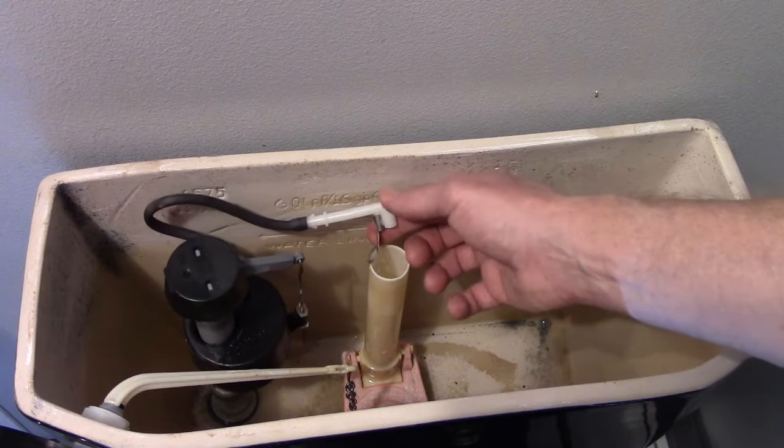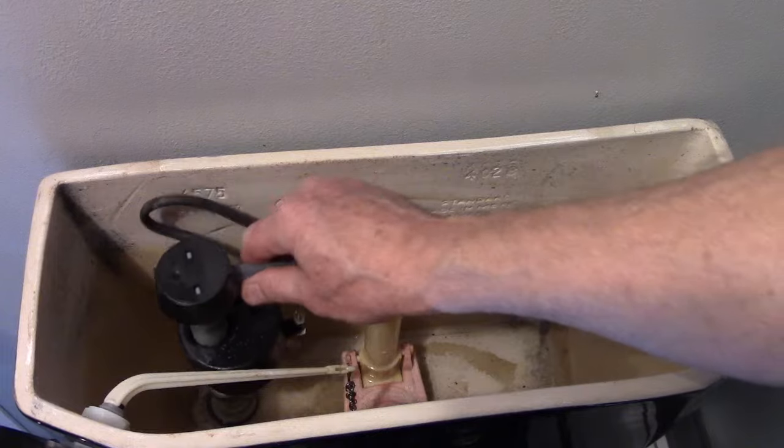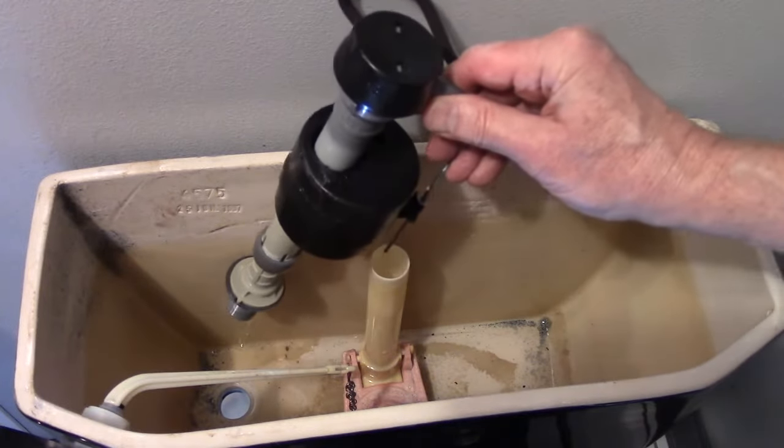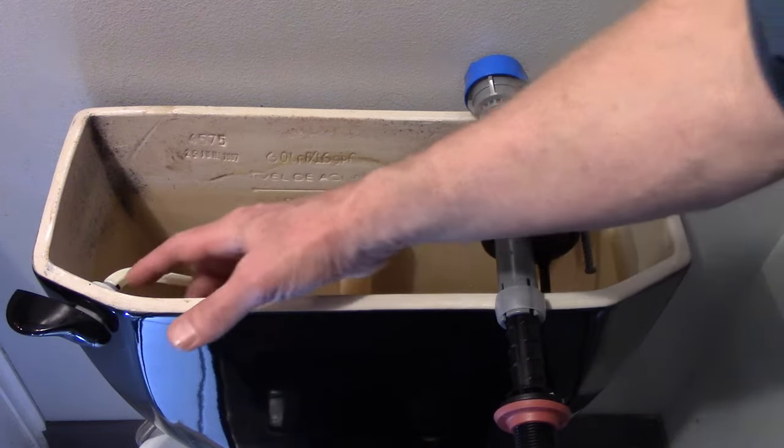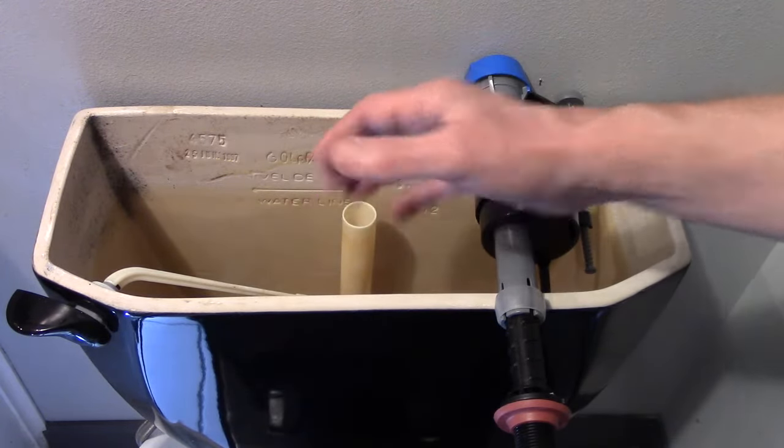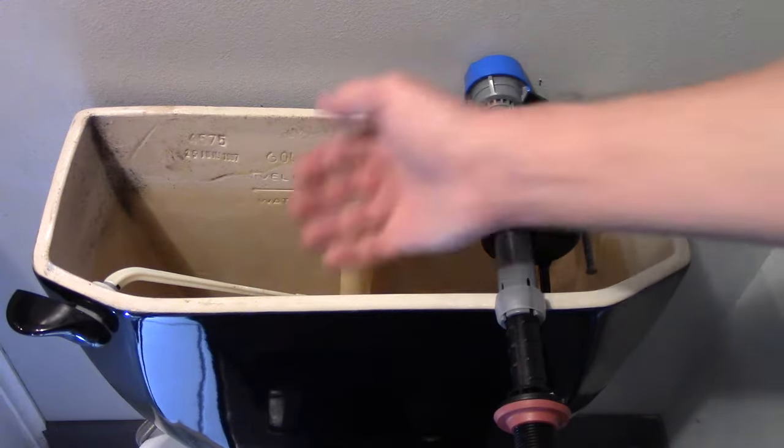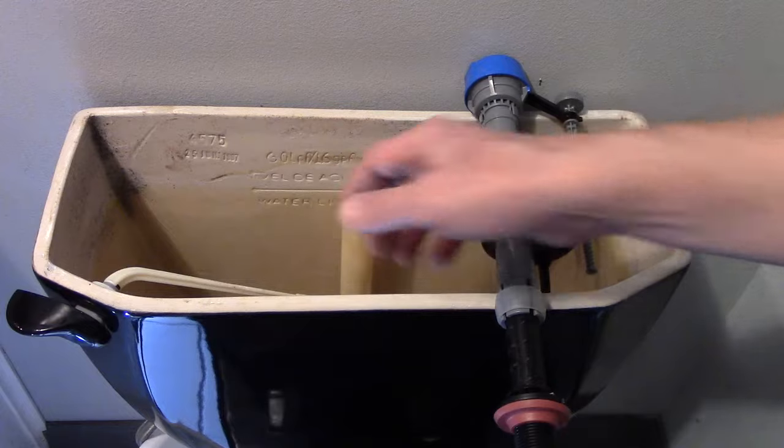There may be a clip holding the fill tube to the flush valve. Just remove that and lift out the old fill valve. The tube on the flush valve should be one inch below the hole for the handle, and this is going to prevent the tank from overflowing. If a fill valve goes bad and it keeps filling the tank, water will go down this tube and into the bowl.